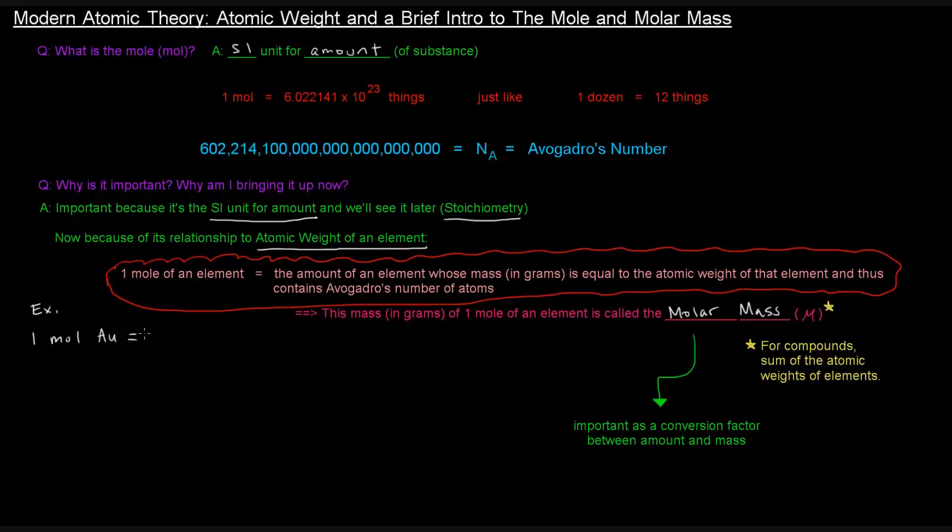Which, if you look on a periodic table for gold, it will be 196.97 grams of gold. So if you have one mole of gold, you have 196.97 grams of gold. Vice versa. If you have 196.97 grams of gold, you have one mole of gold.